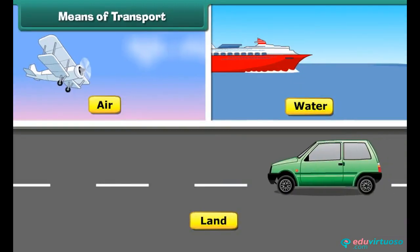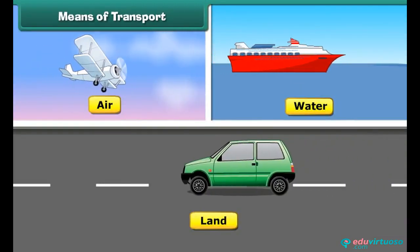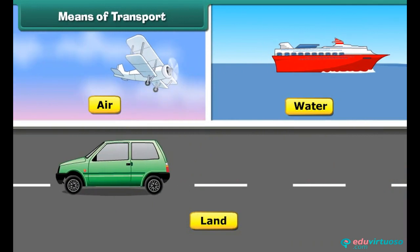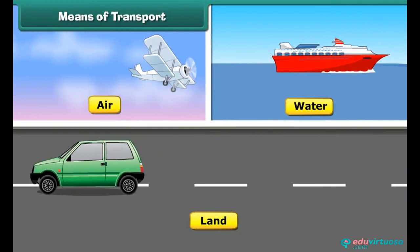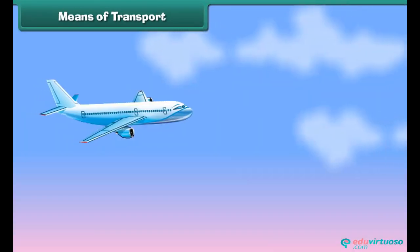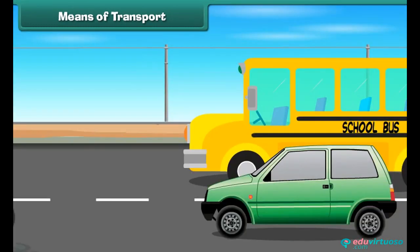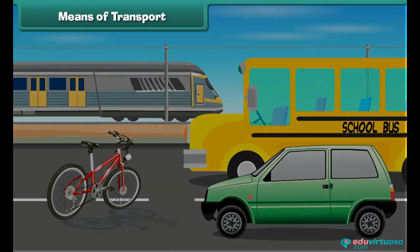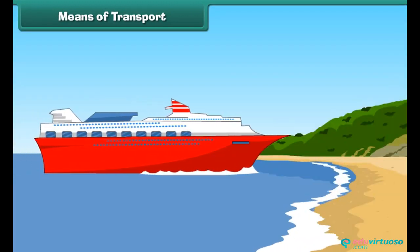Transport is carried out through various modes such as land, water and air. The vehicles used in these modes are not the same — they are different from one another. For example, airplanes fly in air. Buses, cars, bicycles and trains move on land, and ships move in water.